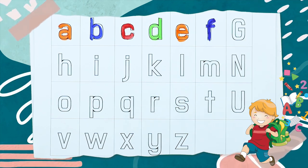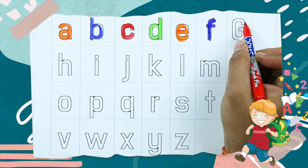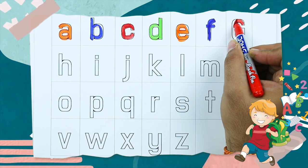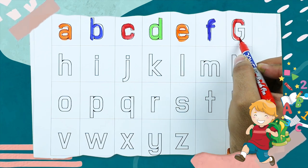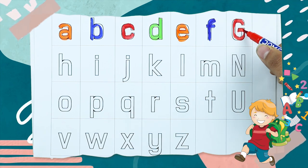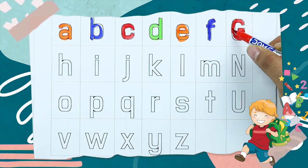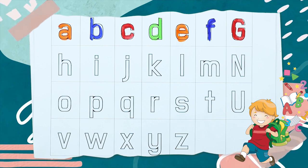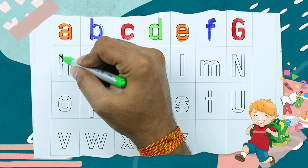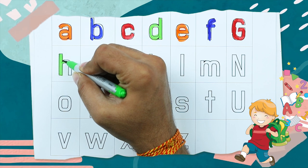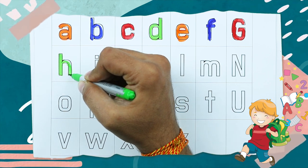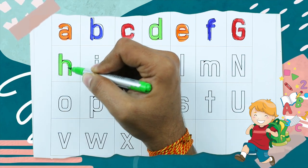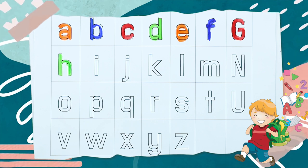G, G for got, it's G, G for got. H, H, H for hen, it's H, H for hen.